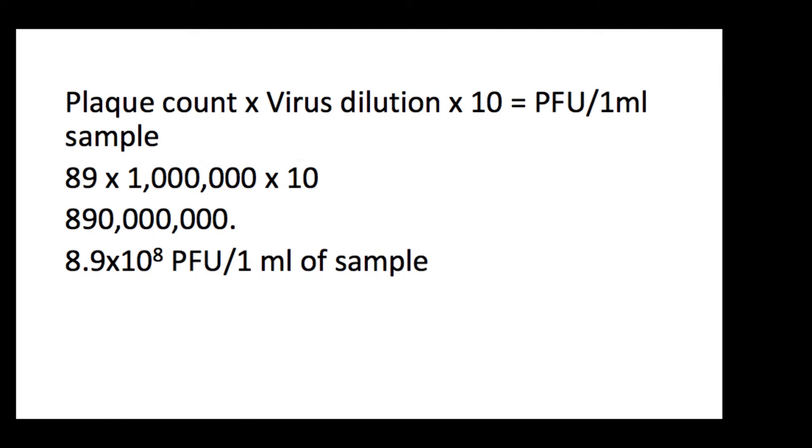So, take your 89, count up your zeros in your virus dilution and 10. So, we have 6 zeros in our virus dilution of a million and 1 zero in our 10. So, add 7 zeros onto your 89. Remember, in a big number, the decimal point is at the end.